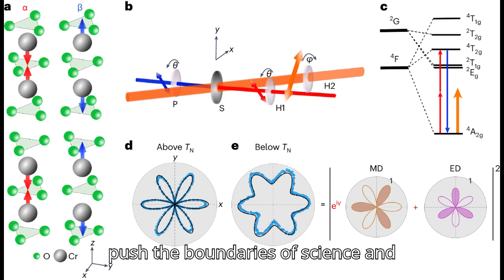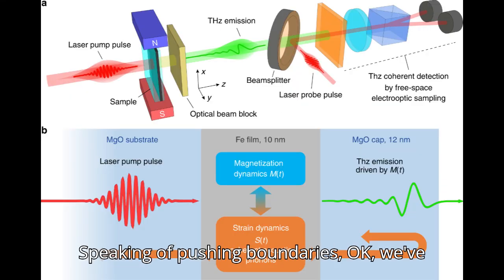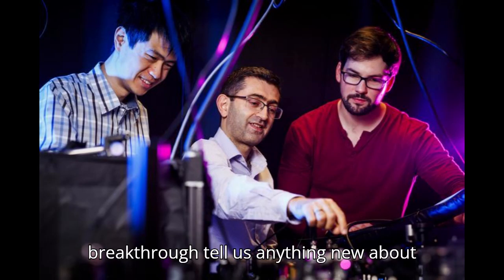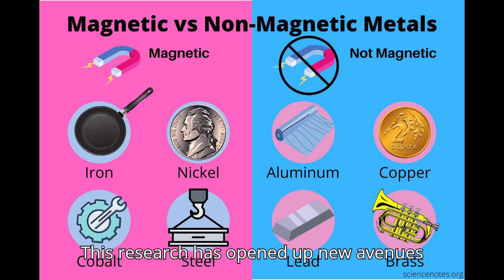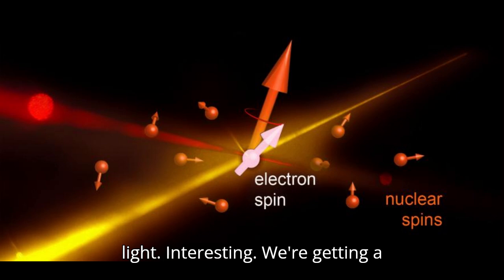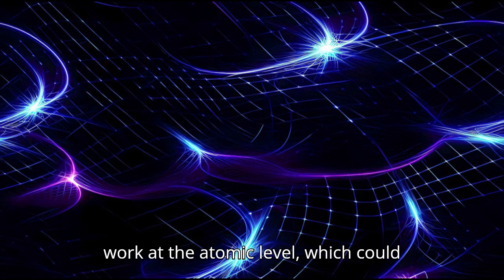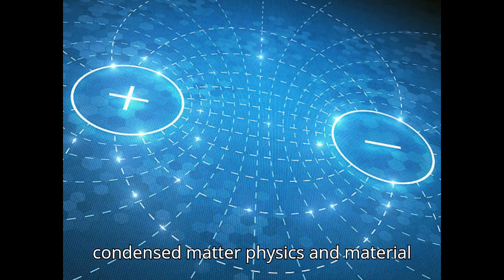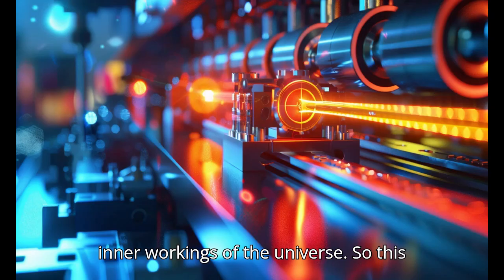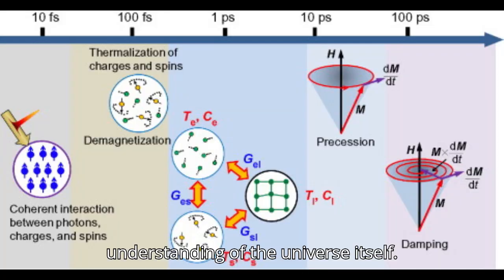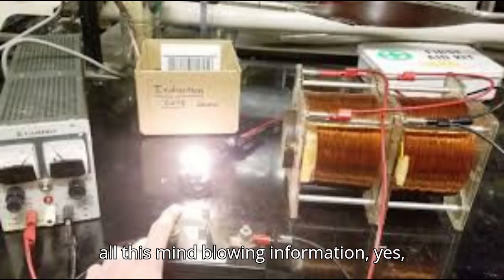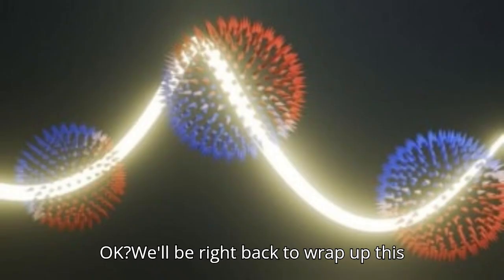It sounds like a delicate dance between light and matter. But it's through these challenges that we push the boundaries of science and engineering. And speaking of pushing boundaries, we've been focusing on the technological applications, but what about the scientific implications? Does this breakthrough tell us anything new about the universe or how it works? Absolutely. This research has opened up new avenues for exploring the fundamental nature of magnetism and its interaction with light. We're gaining a deeper understanding of how these forces work at the atomic level, which could lead to brand new insights in fields like condensed matter physics and material science. It's like we've discovered a whole new set of tools to probe the inner workings of the universe. So this isn't just about building cool gadgets, it's about expanding our fundamental understanding of the universe itself.